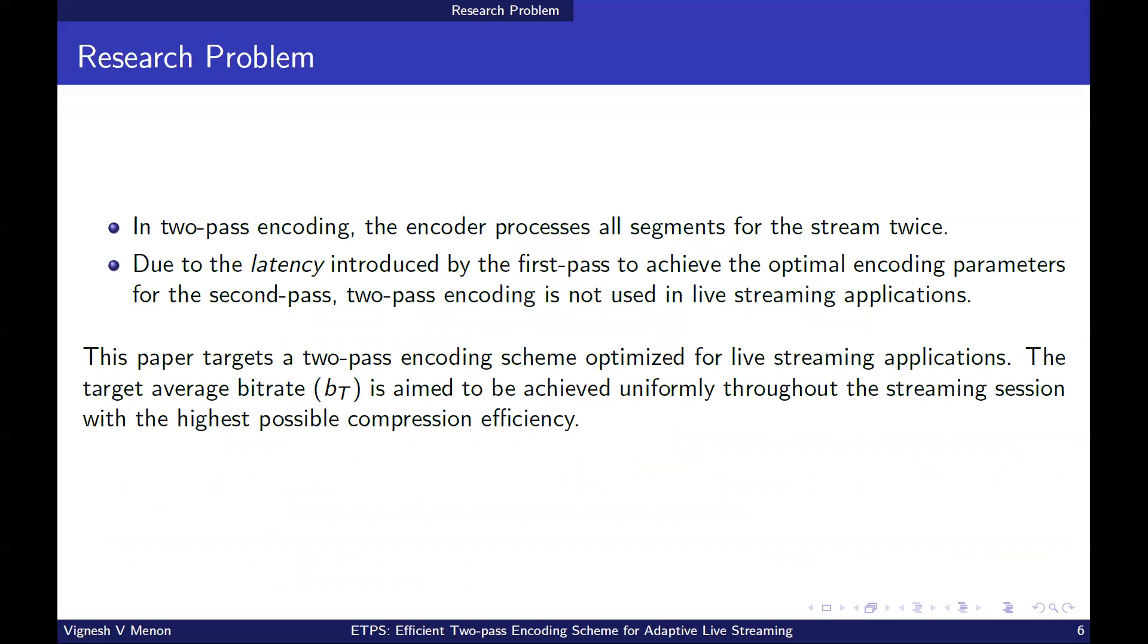In two-pass encoding, the encoder processes all segments for the stream twice. Due to the latency introduced by the first pass to achieve the optimal encoding parameters for the second pass, two-pass encoding is not used in live streaming applications currently. So, this is our research problem. And in this paper, we target a two-pass encoding scheme optimized for live streaming applications. The target bitrate is aimed to be achieved uniformly throughout the streaming session with the highest compression efficiency. This scheme is expected to yield no additional latency in streaming.